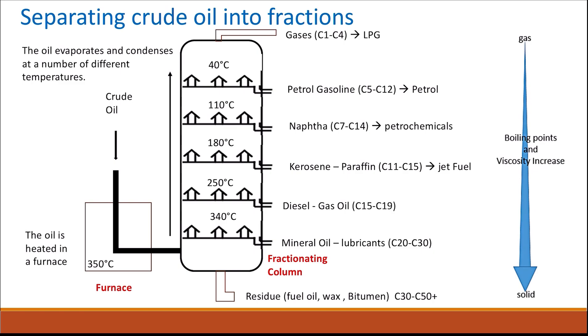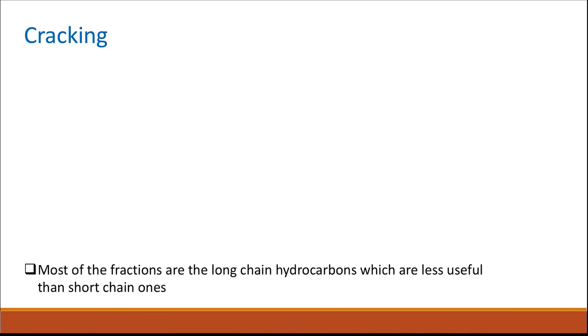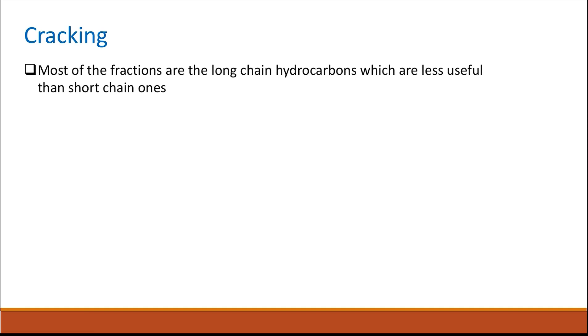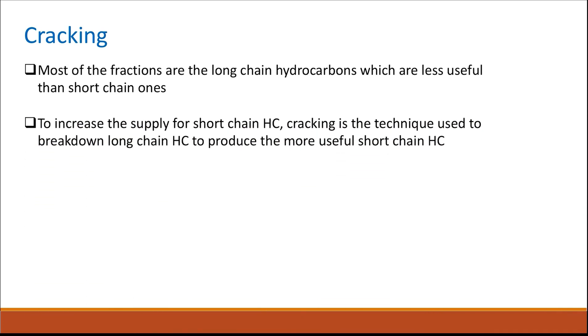As we go down the fractionating column, boiling points and viscosity increase — starting with gases at the top and ending with solid residues at the bottom. Most components separated by fractional distillation are large, long-chain hydrocarbons, which are less useful than the short-chain ones. To increase the supply of short-chain hydrocarbons, we use a process called cracking.